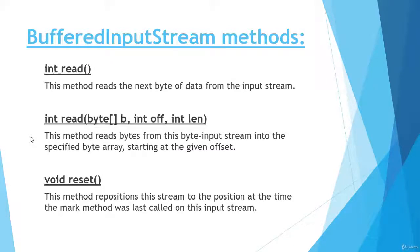Next we have the read method, which reads the next byte of data from the input stream. If we want to read one byte of data from the stream we use the read method. We also have an overloaded version of this method with three parameters: a byte array b, an integer off, and an integer length. This method reads bytes from the input stream into the specified byte array starting at the given offset. Next we have the reset method, which repositions the stream to the position at the time the mark method was last called.